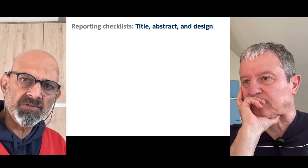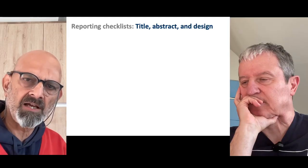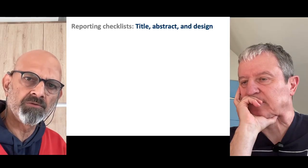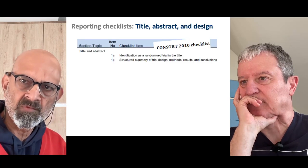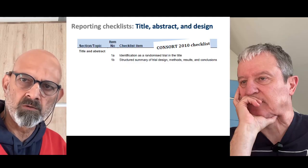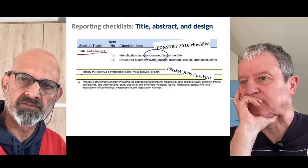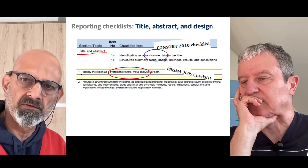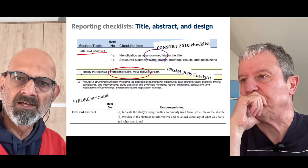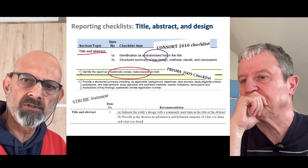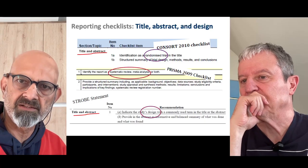When writing papers, authors are expected to provide the design in the title and abstract — the idea is that immediately the reader should know the level of evidence of the publication. The CONSORT checklist requires that 'randomized trial' is mentioned in the title, and systematic reviews require that 'meta-analysis', if used, is mentioned in the title and abstract. For observational studies, the study design — either cohort or case control — should also be mentioned in the title and abstract.